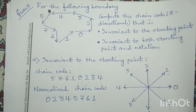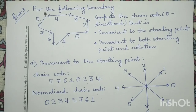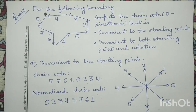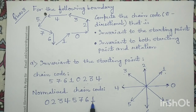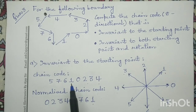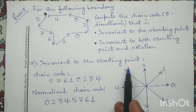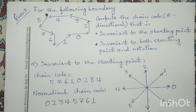Similarly, 0 2 3 4 5 7 6 1 is the normalized chain code of this given boundary — in other words, it is the eight-directional chain code which is invariant to the starting point. Thank you.